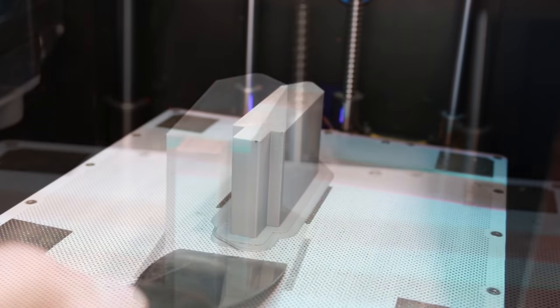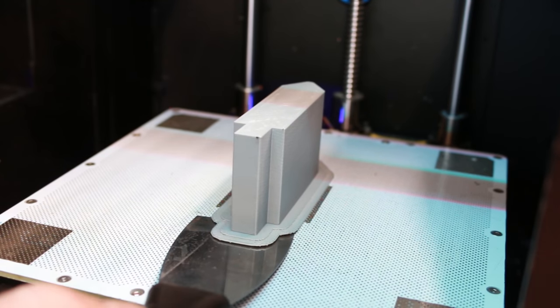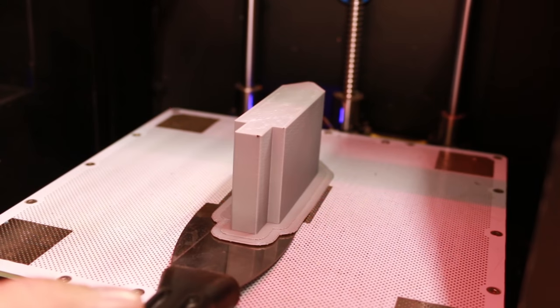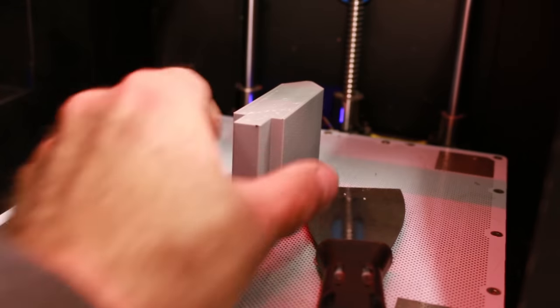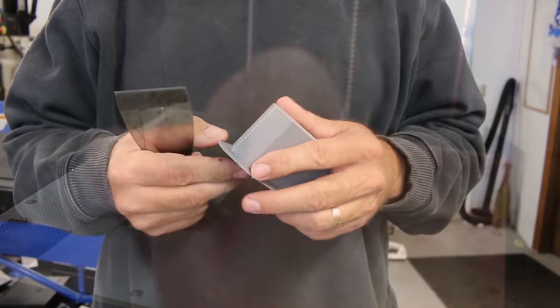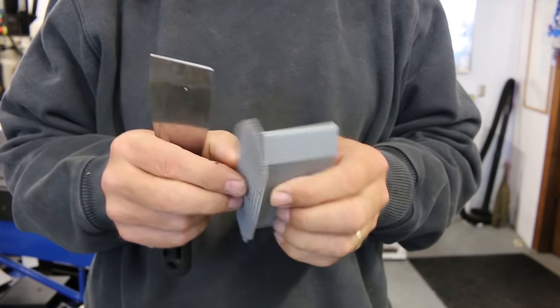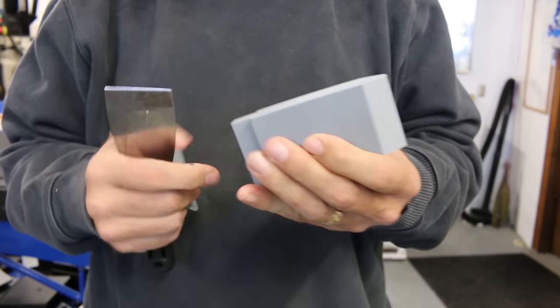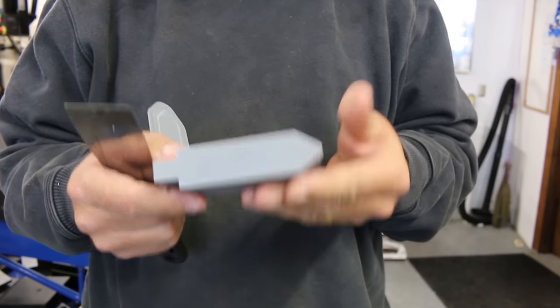Once the part is finished printing, we can remove it from the build platform using a putty knife and a small hammer. This is done very gently with a light tapping motion to avoid any shock on the build platform. The hammer that we're using is literally only a few ounces. The build platform will remove easily from the part and the final product is a high density plastic bending die ready to be put into service.